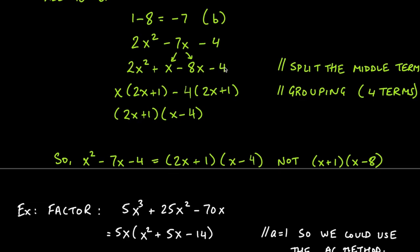After splitting the middle term we have four terms, and four terms reminds us of grouping. We group the first two terms and factor out an x as the GCF. We group the last two terms and factor out -4 as the GCF. Inside we're left with the same binomial 2x + 1 in both groups, so we factor that out. Dividing out 2x + 1 from the first group leaves x, and from the second group leaves -4.